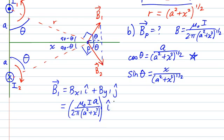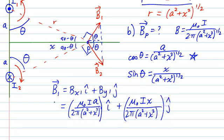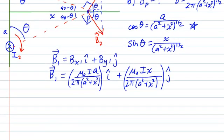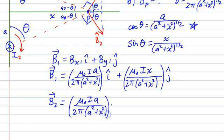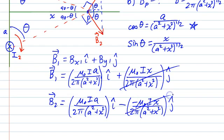And then for the y-component, it's going to be μ₀Ix over 2π(a² + x²) ĵ. So that is the magnetic field due to wire 1. Similarly, the field from wire 2 is going to have the identical x-component. The difference here is that the field in the y-direction is going to be negative μ₀Ix over the same thing. So just like I promised, the y-components are going to completely cancel out.